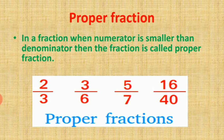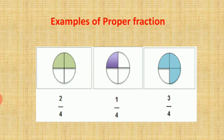You can see different examples of proper fractions. The first one is two upon three — here two is numerator and three is denominator. Since two is smaller than three, numerator is smaller than denominator, so it is a proper fraction. Same way, three upon six, five upon seven, and sixteen upon forty all have denominators bigger than the numerator, so they are all proper fractions. In examples two by four, one by four, and three by four, all denominators are bigger than the numerator, so they are all proper fractions.